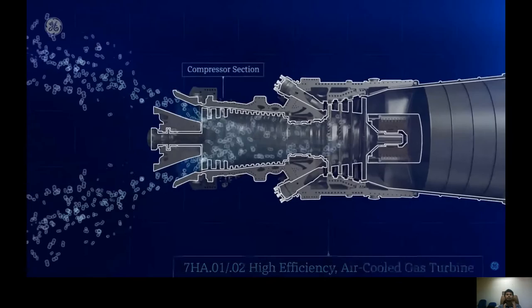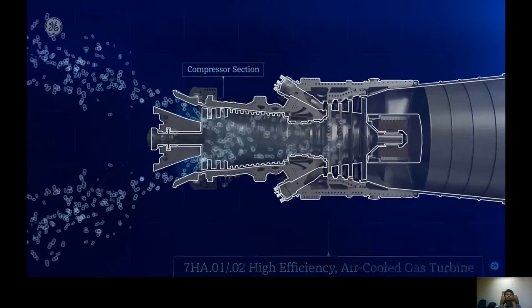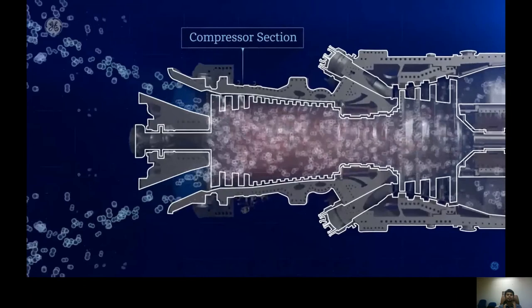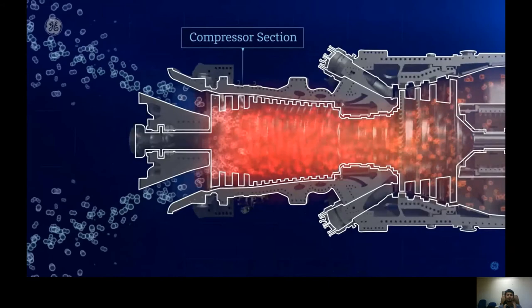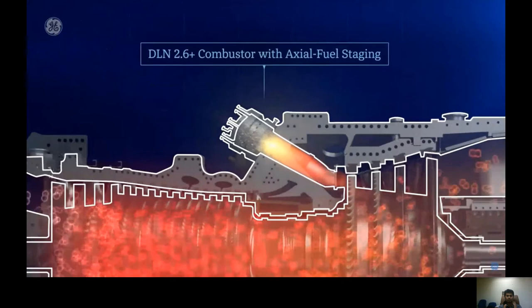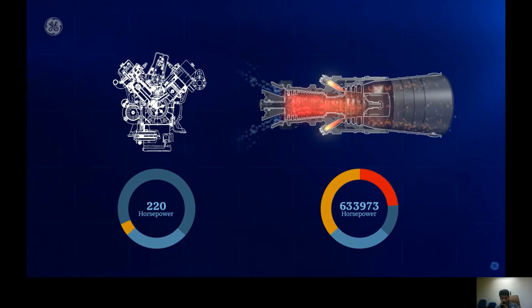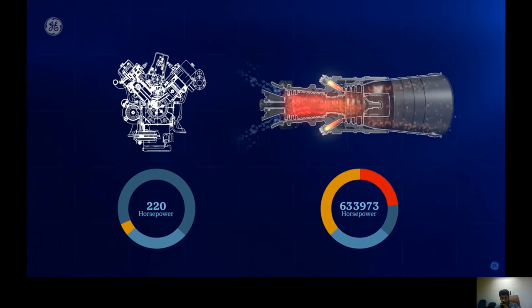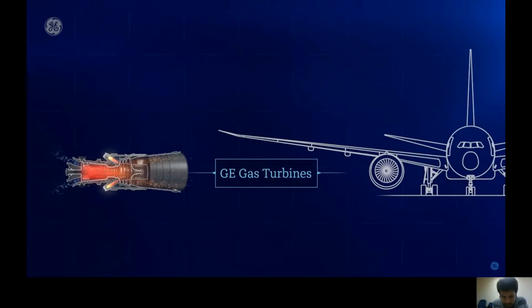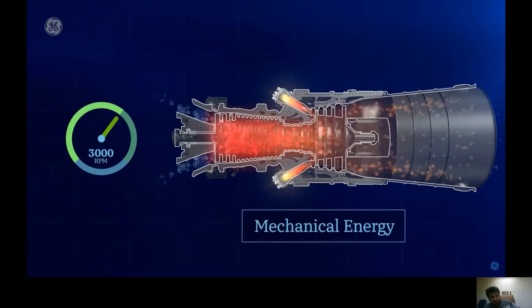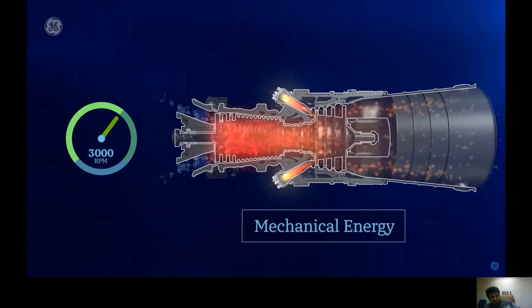First, air is drawn in through one end of the turbine. In the compressor section, all those air molecules are squeezed together, similar to a bicycle pump squeezing air into a tire — the air gets hotter and pressure increases. Next, fuel is injected into the combustor, where it mixes with hot compressed air and is burned. This is chemical energy at work, essentially like a car engine but at about 2,900 times more horsepower — exactly like the turbine engines on jet airplanes.